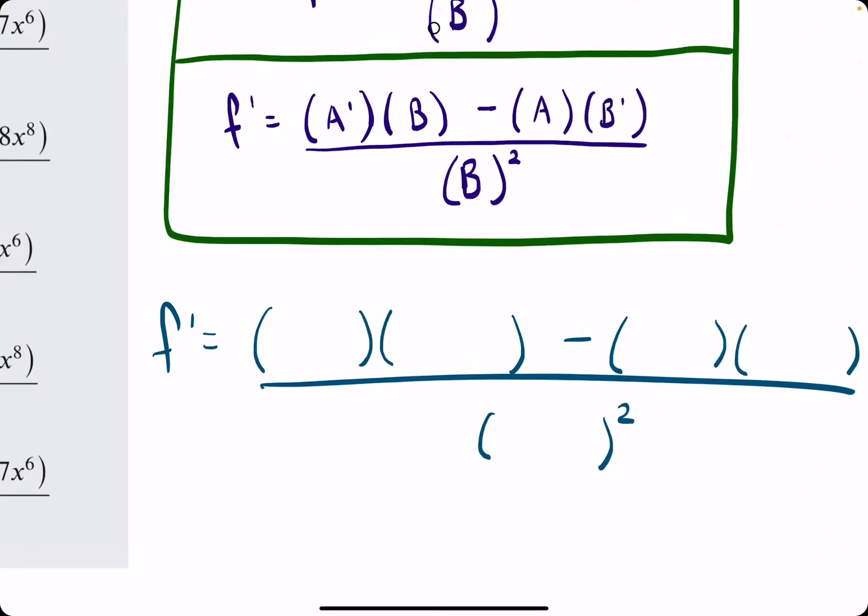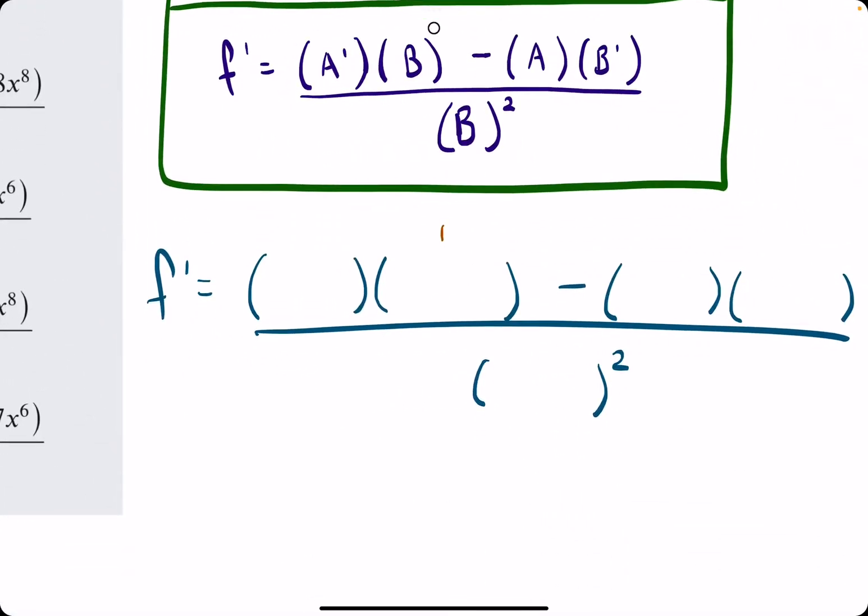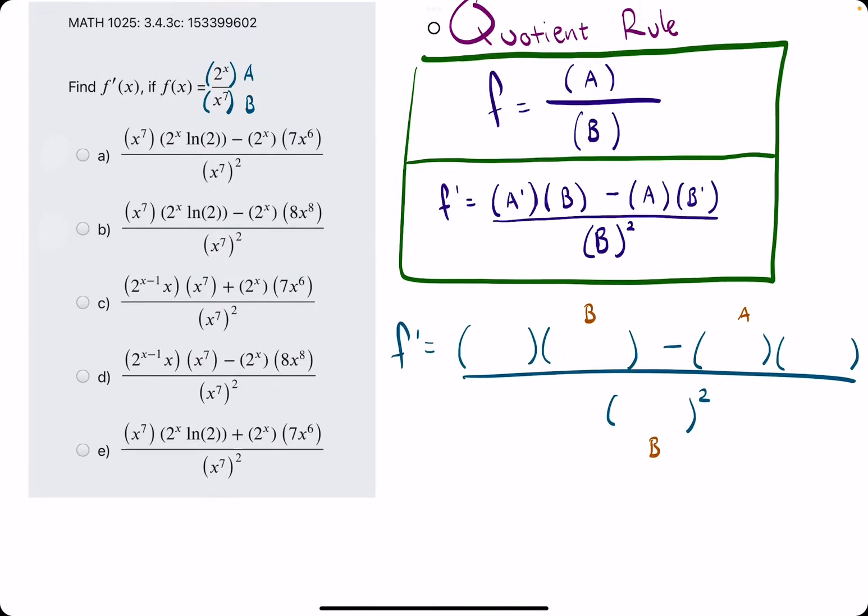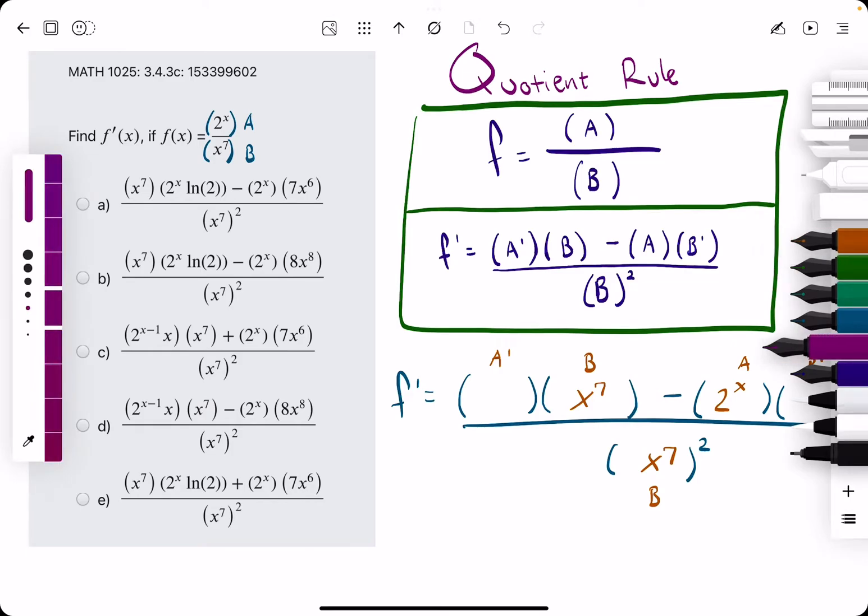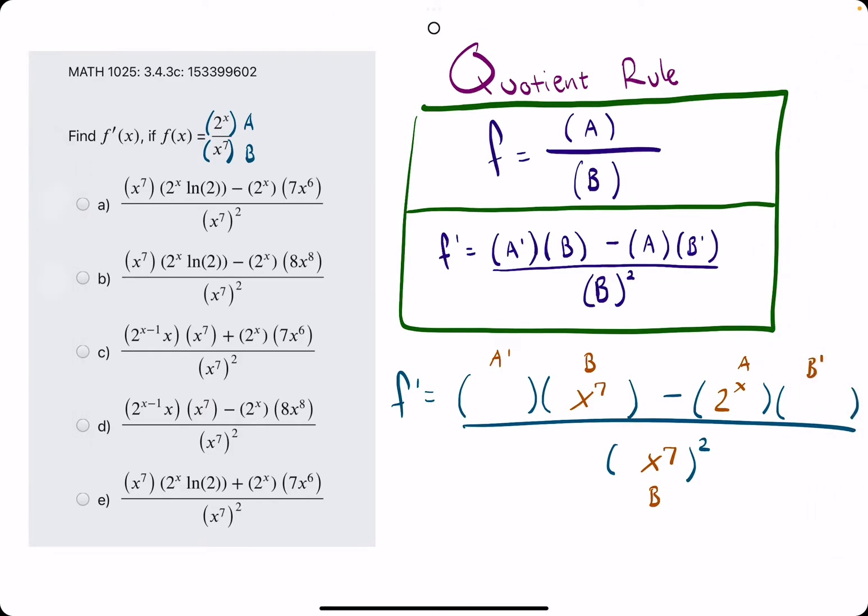Let's start plugging in what we know. Let's start with B and A that go in those places respectively. So we will have x to the 7th as our B, 2 to the x is our A, and B again is x to the 7th. Now we just need A prime here and B prime here.